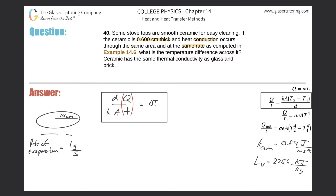Did they tell us the heat energy or the time? No. But they told us the rate of evaporation from the pan is one gram per second. As soon as I see evaporation, I think about heat energy associated with phase change — that gives us the formula Q = mL, where L is the latent heat of vaporization. This is a constant for water, which you find referenced back in the original example.